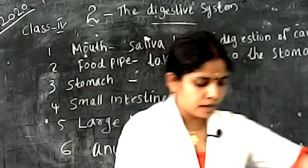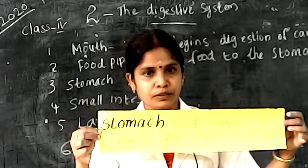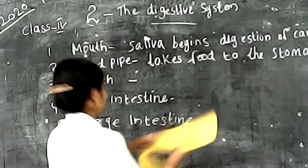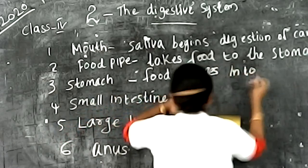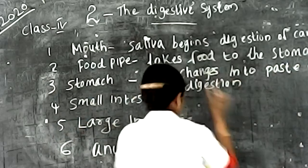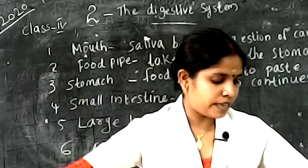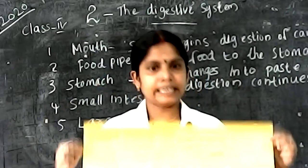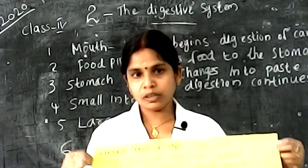Next one, stomach: food changes into paste and digestion continues. Next one, small intestine: digestive juices from liver and pancreas are added to the food and digestion is completed.